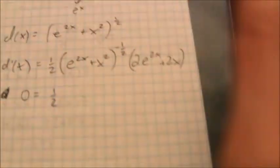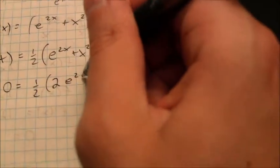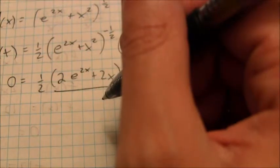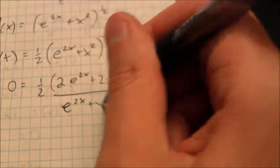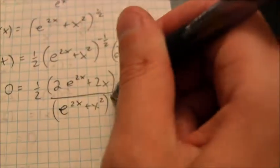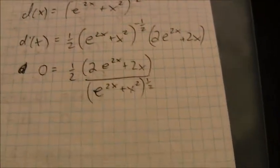You can write this in various different forms. Remember that the minimum is going to occur where my derivative is equal to 0. I'm going to rewrite this as one-half times 2 e to the 2x plus 2x all over e to the 2x plus x squared raised to the positive one-half power. I'm going to write it in fractional form here.